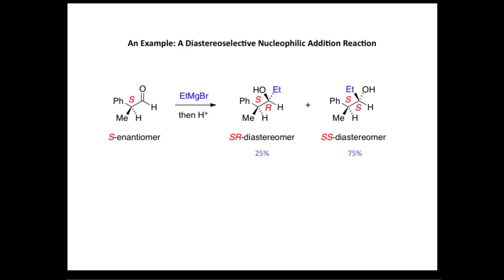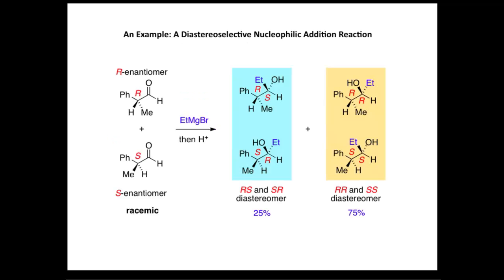This scheme considered nucleophilic addition to a single enantiomer of the aldehyde, but what about nucleophilic addition to a racemic mixture? Both enantiomers of the aldehyde starting material, S and R, are present in a 50:50 ratio. We've seen the S enantiomer forms the SR and SS diastereoisomers in a 3:1 ratio. The R enantiomer forms the RS and RR diastereoisomers in the same ratio — three RR to one RS.